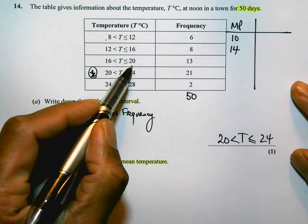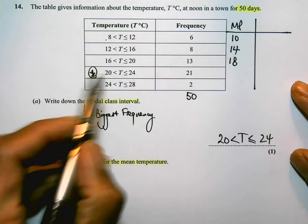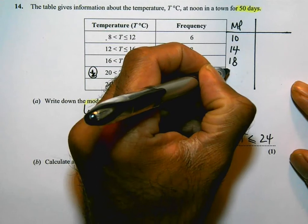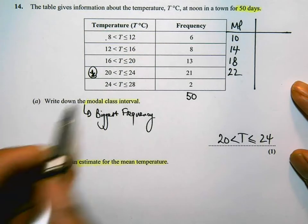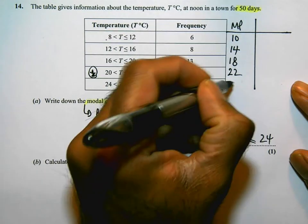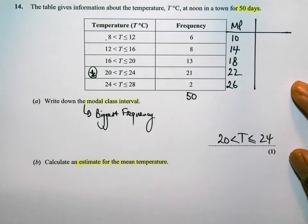16 plus 20 is 36. 36 divided by 2 is 18. 20 plus 24 is 44. 44 divided by 2 is 22. And finally, 24 plus 28 is 52. 52 divided by 2 is 26. Those are the midpoints.